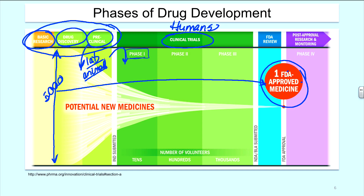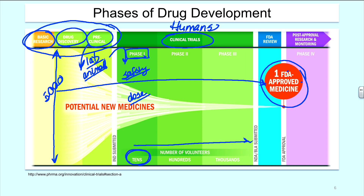In Phase 1 trials, we usually have tens to dozens of patients. What we're interested in is safety — if this is our first time testing in human beings, we want to make sure the agent is safe. We may also start to look at the appropriate dose. This is where we try different doses in a dose escalation study: starting with a small dose to test for safety and moving incrementally up to find the most appropriate dose to carry forward into Phase 2 studies.